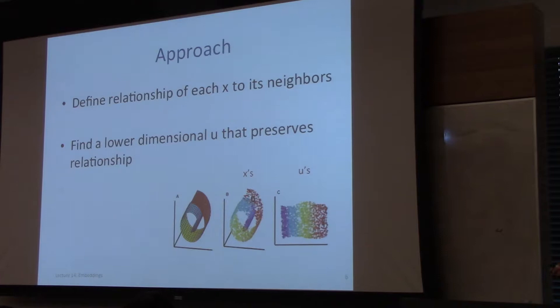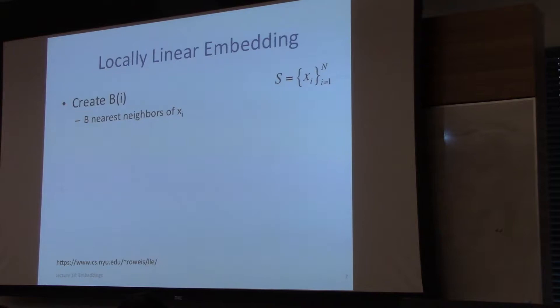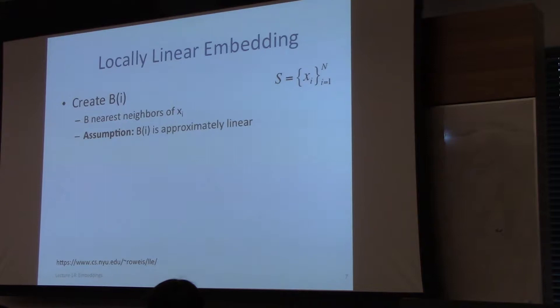Step one: define the relationship between X_i and its neighbors. Let B(i) denote the B nearest neighbors of X_i, where B is a tuning parameter of the model. The assumption is that the neighbors of X_i are approximately linear — that's the key modeling assumption. If that is the case, then X_i can be written as a convex combination of all the X_j's in B(i).